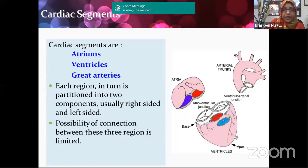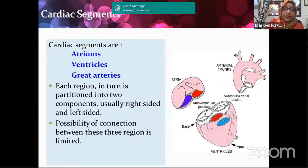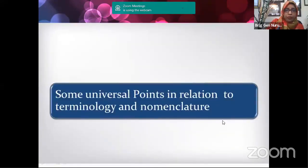Here again are the three segments of the heart: atrial segment, ventricular segment, and arterial segment. At the basal level cut section of the heart you can see all four valves: the tri-leaflet tricuspid valve, the bi-leaflet mitral valve, the aortic valve which is posterior, and the pulmonary valve which is anterior. Before studying morphology of individual parts, we should know some universal points about terminology and nomenclature.